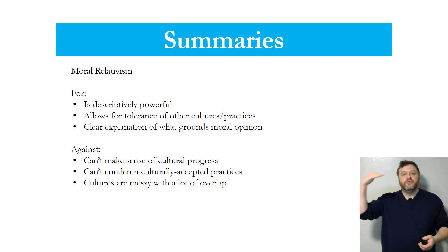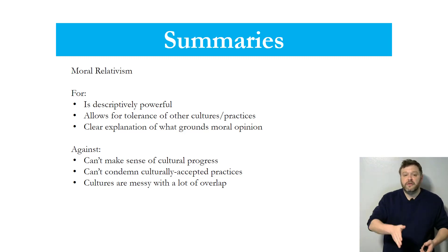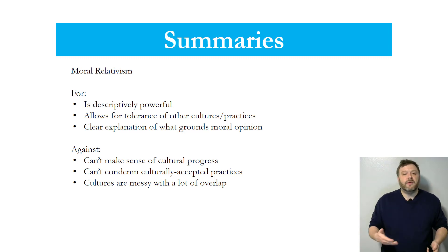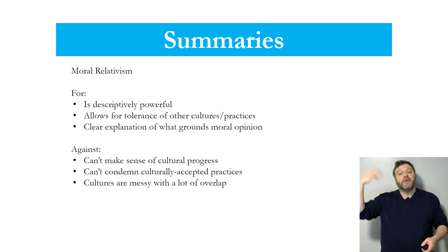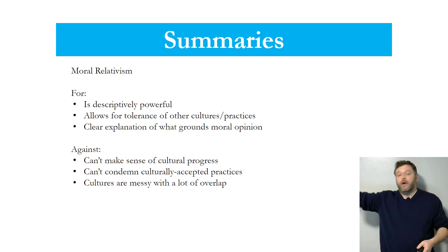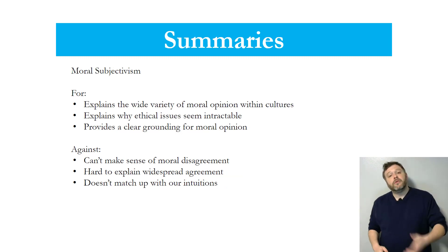Moral relativism is the next most plausible meta-ethical view because you can be wrong on this view — the way that happens is that your moral opinions differ from the society or culture you're part of. For example, if you identify as Catholic but view abortion as morally permissible, you are incorrect on this view because your culture says it's not. So with both moral objectivism and moral relativism you can be wrong, but the reason you're wrong differs between the two.